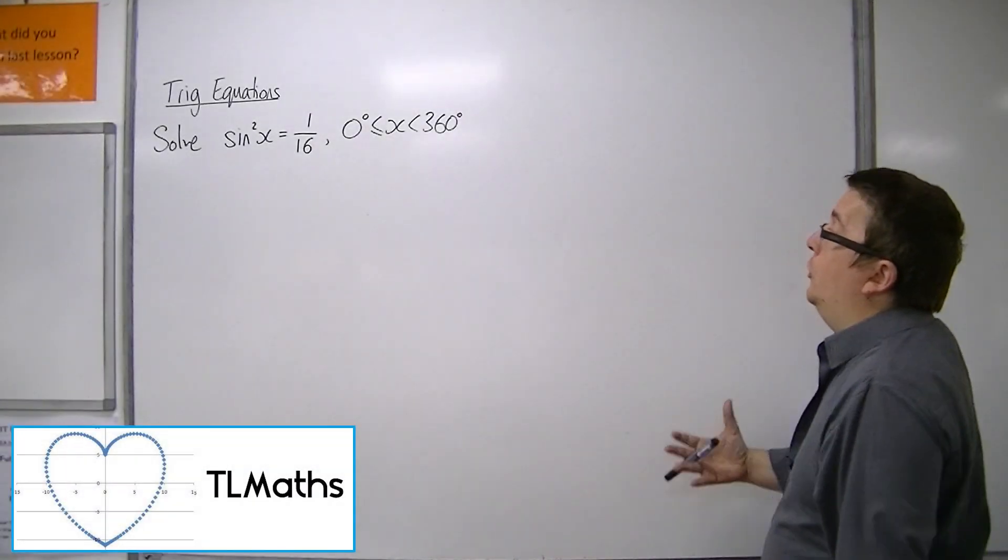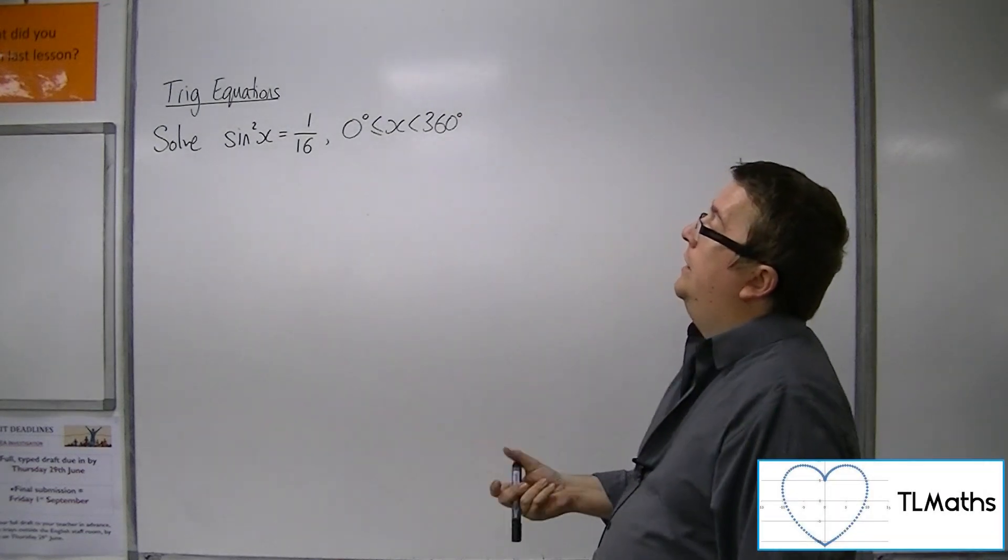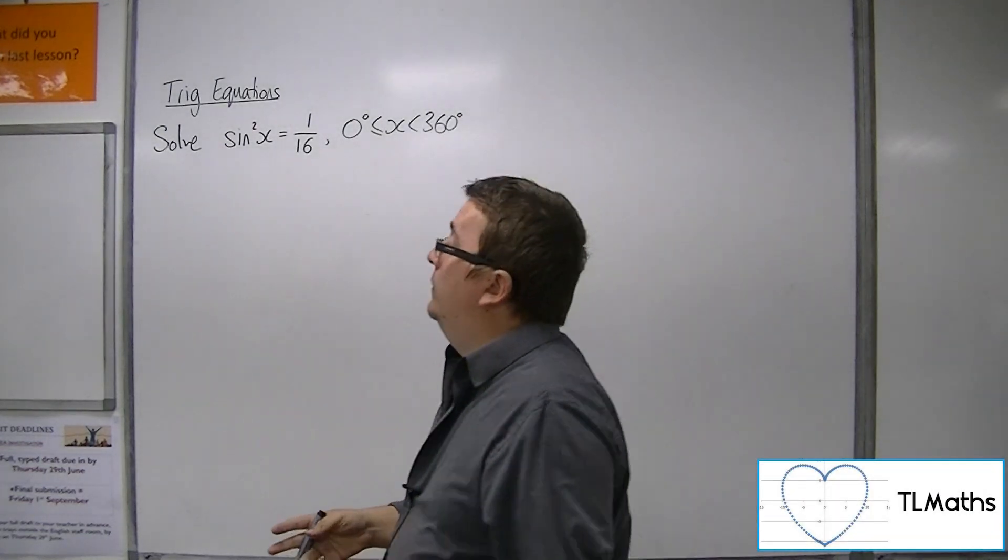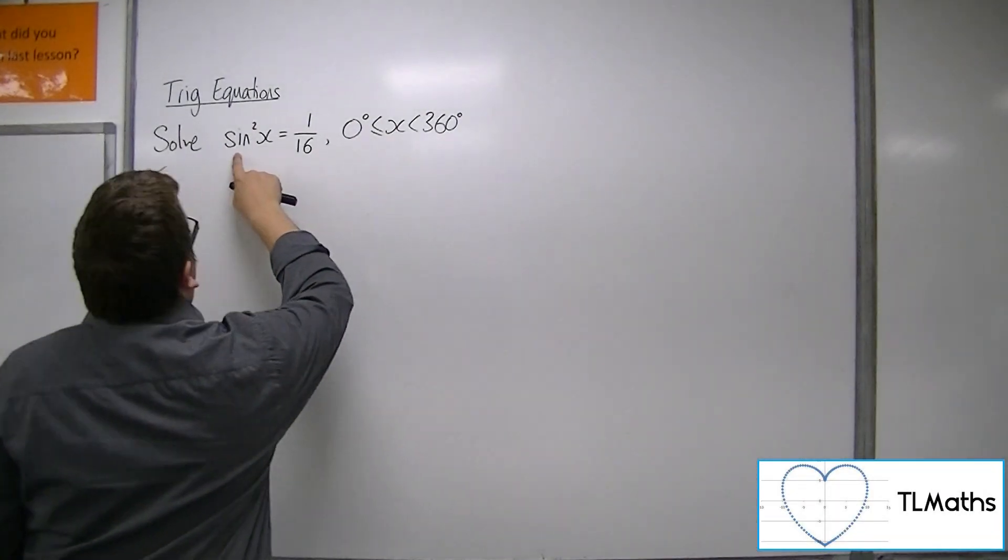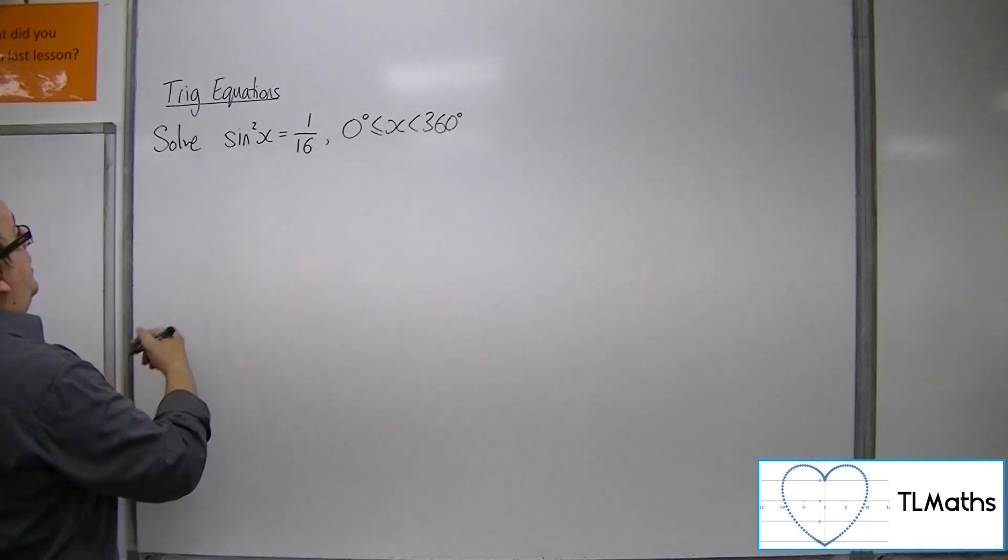OK, so let's say I want to solve the equation sine squared x equals 1/16 between 0 and 360 degrees. Because I've got sine squared equals 1/16, it makes sense to square root both sides.